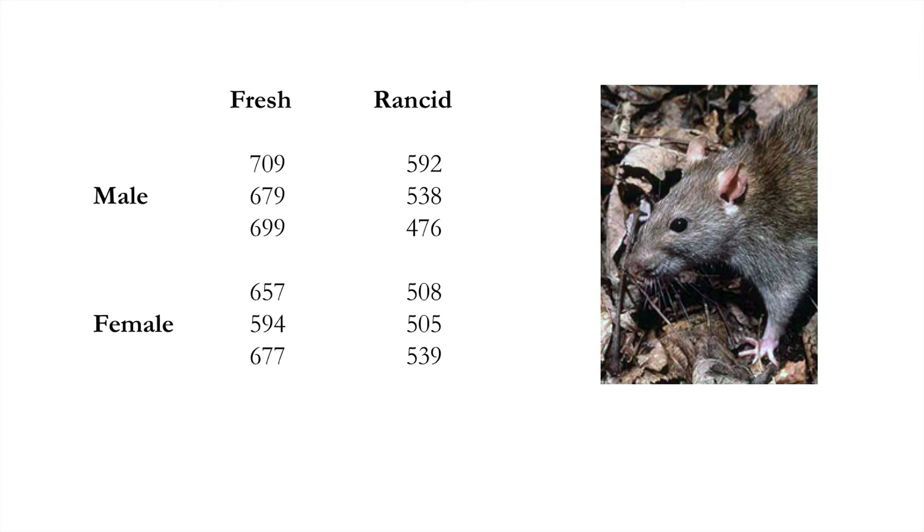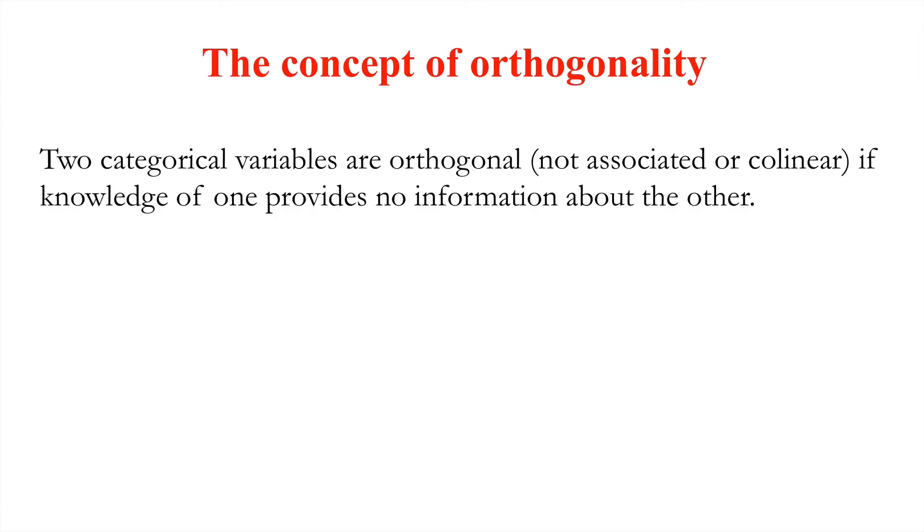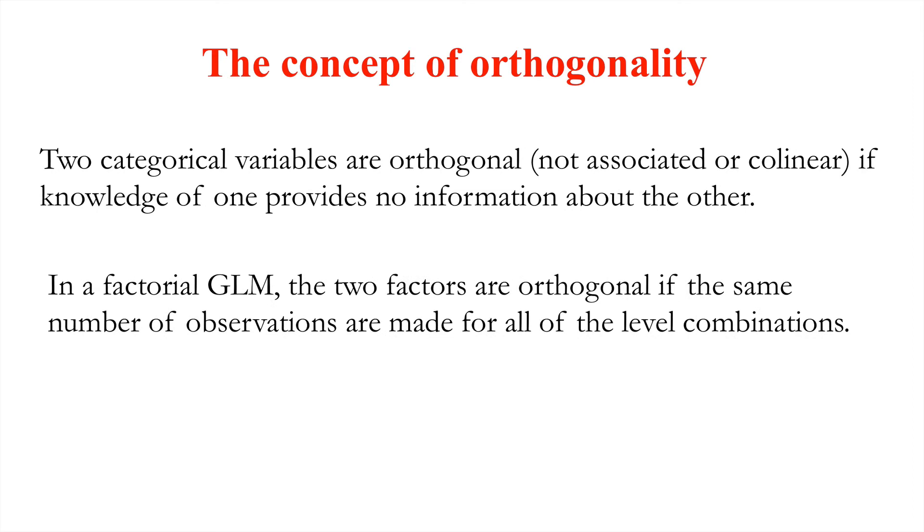Let's revisit this issue of orthogonality. Two categorical variables are orthogonal, i.e. they're not associated with one another and they're not collinear. If knowledge of one provides no information about the other. For example, if we knew the sex, we wouldn't be able to guess what state of lard that sex individual was actually presented with. In a factorial general linear model, the two factors are orthogonal if the same number of observations are made for all of the level combinations. Why is that important?